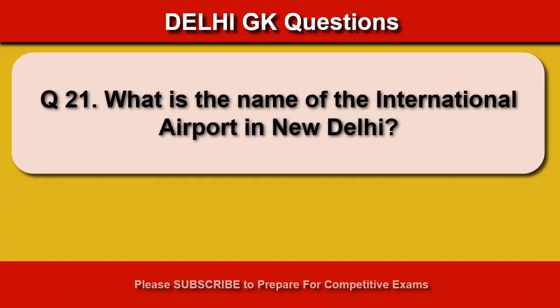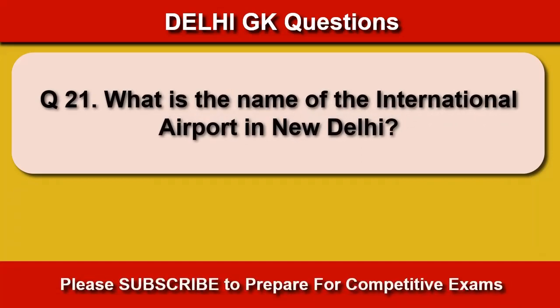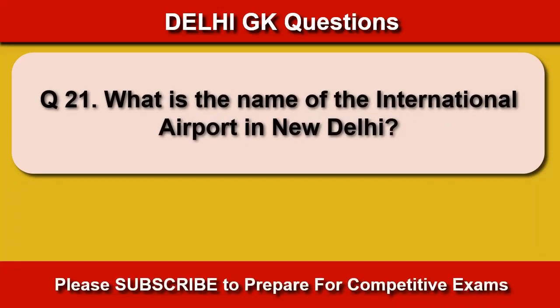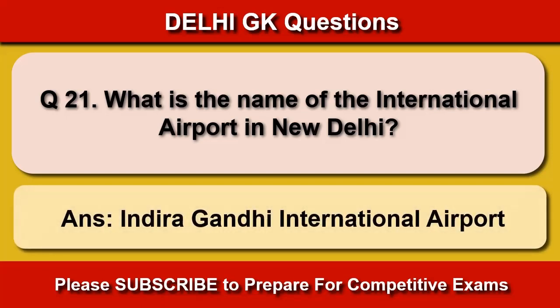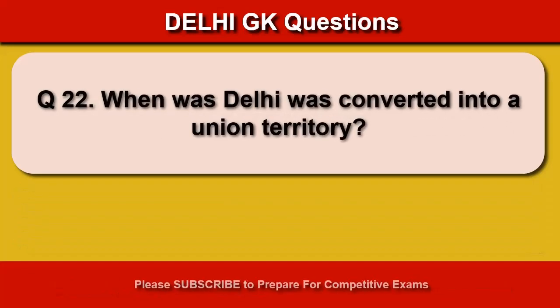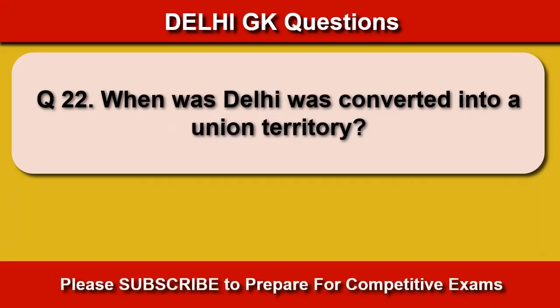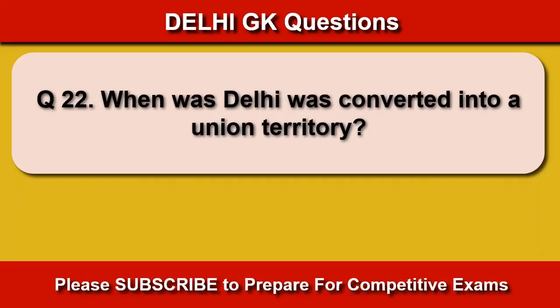What is the name of the international airport in New Delhi? Indira Gandhi International Airport. When was Delhi converted into an Indian territory? 1966.